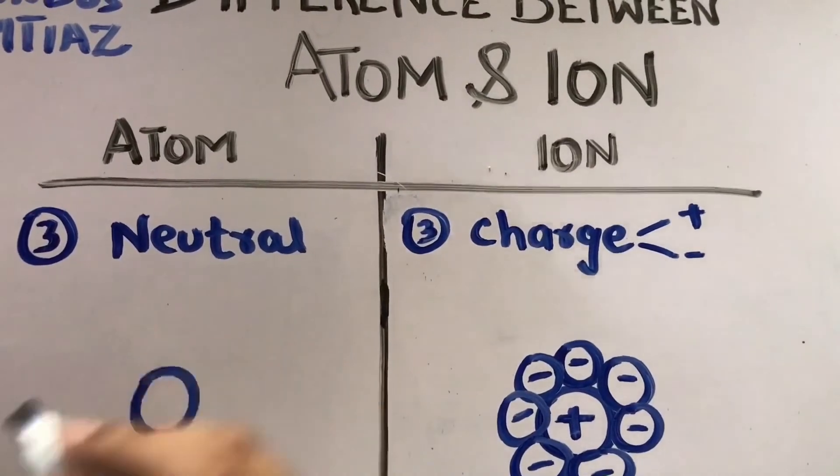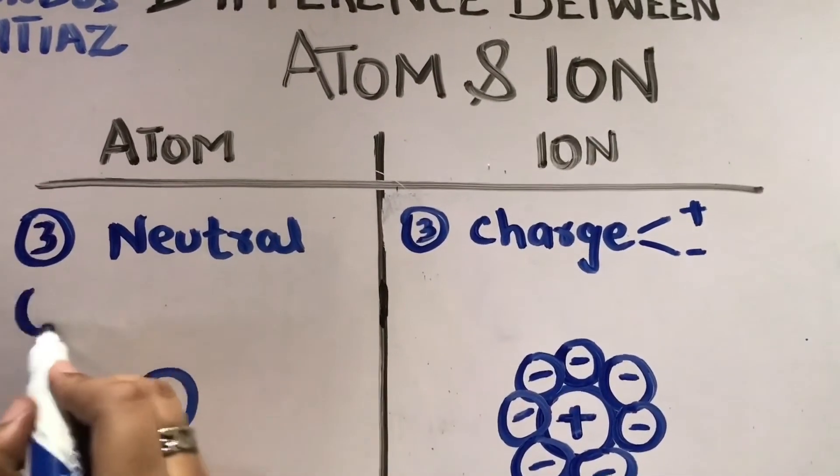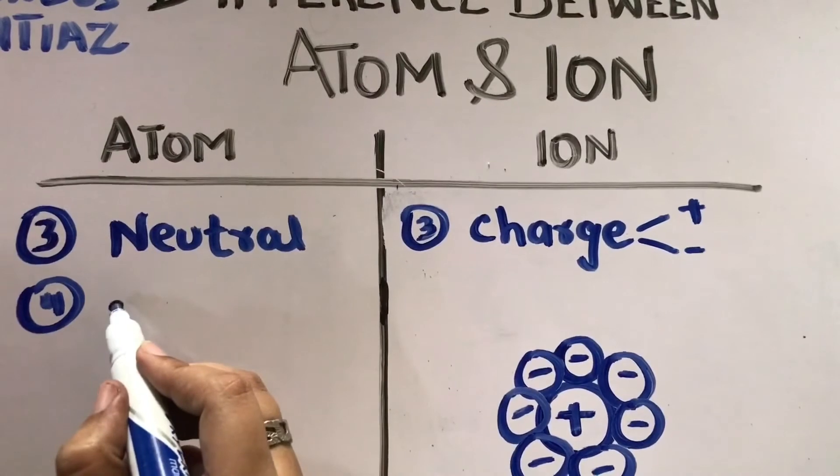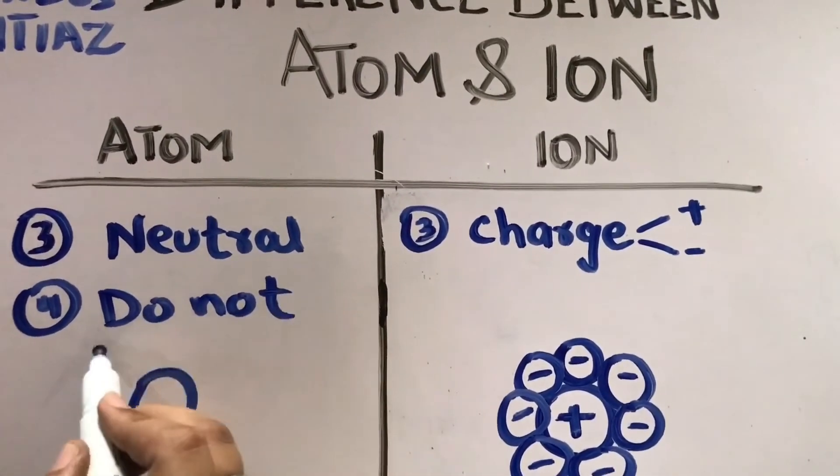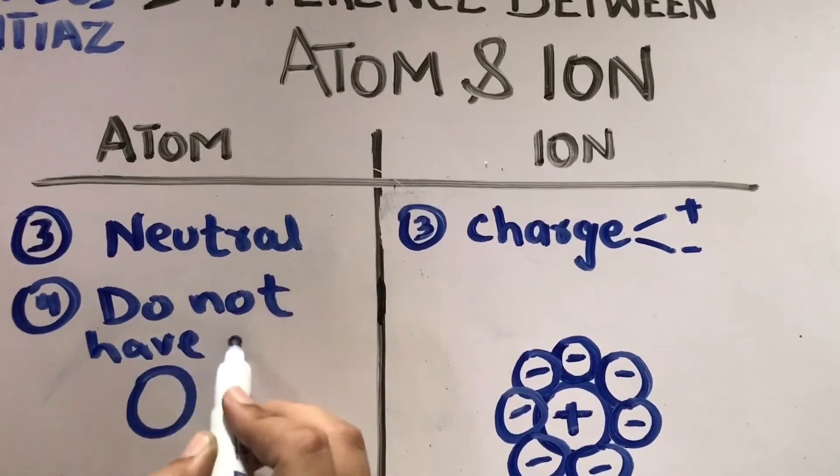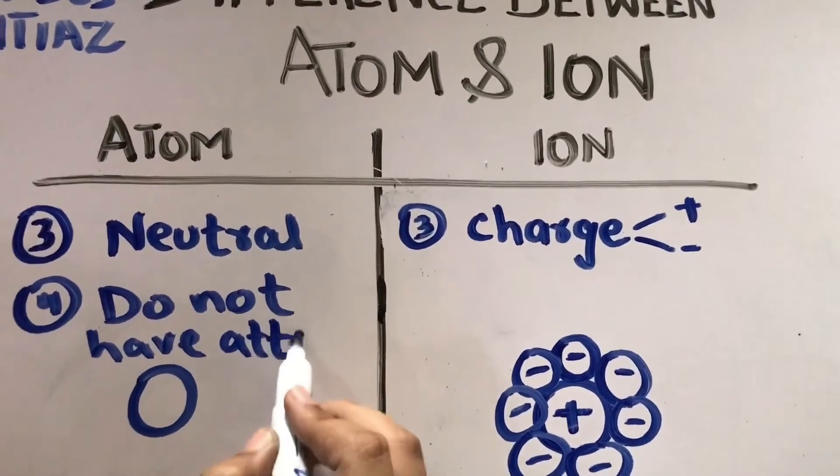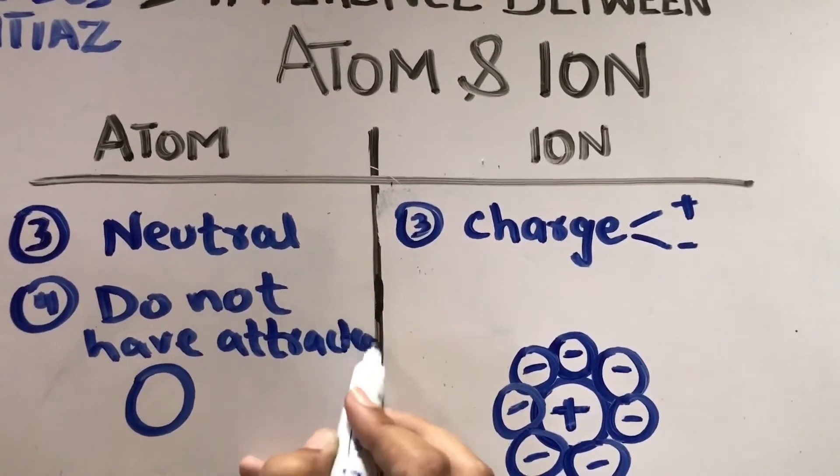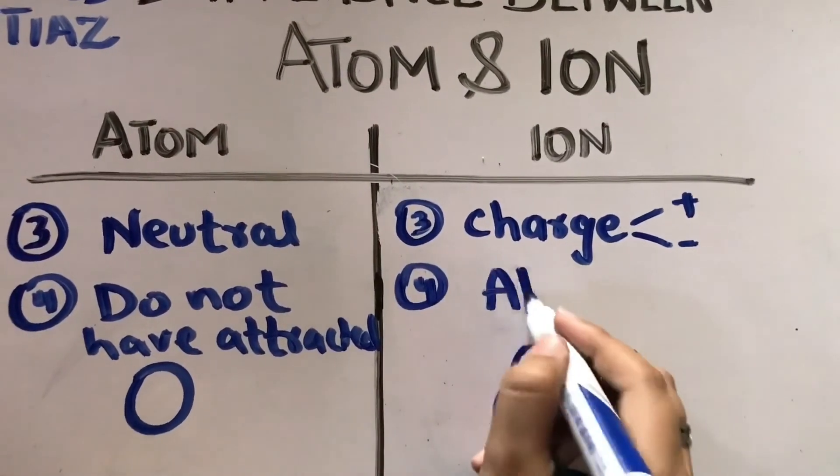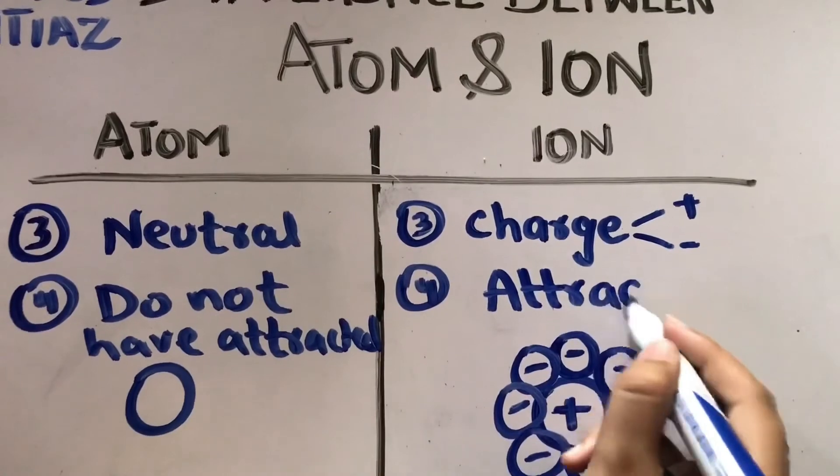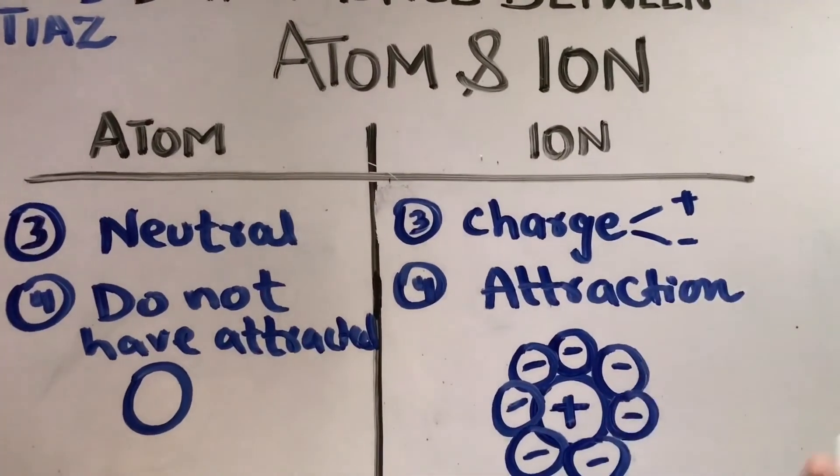Neither positive nor negative. So we can say that the fourth point is this. Atoms do not have attraction, or do not get attracted in the electric field. Ions have attraction towards opposite charges.